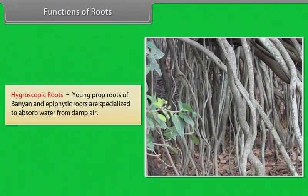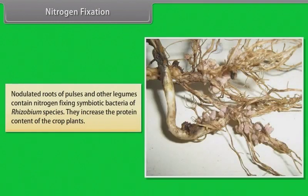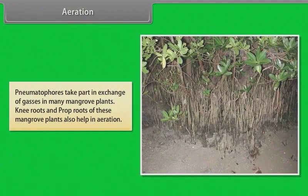Hygroscopic roots — young prop roots of banyan and epiphytic roots are specialized to absorb water from damp air. Nitrogen fixation — nodulated roots of pulses and other legumes contain nitrogen-fixing symbiotic bacteria of Rhizobium species, which increase the protein content of crop plants. Aeration — pneumatophores take part in exchange of gases in many mangrove plants; knee roots and prop roots of mangrove plants also help in aeration.